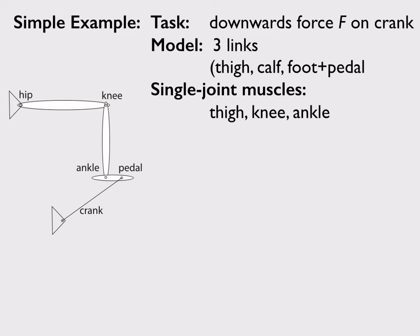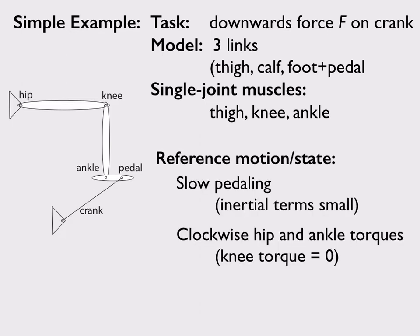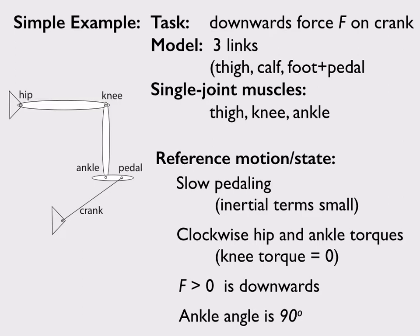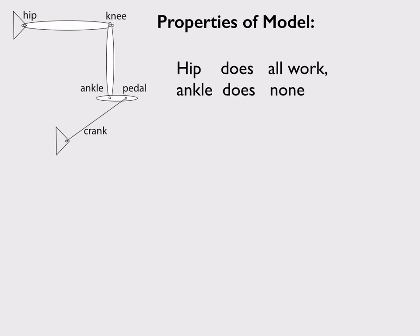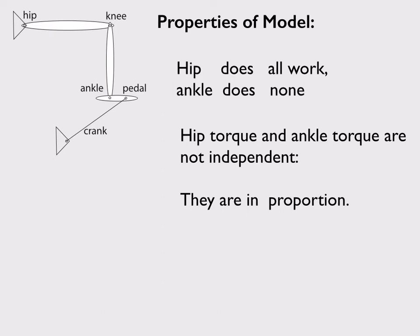Here's the bicycle model. We have a hip, a hip muscle, a thigh, a knee, a knee muscle, an ankle, an ankle muscle, and a pedal. The pedal and foot are one thing. We're talking about the ankle joint location on the foot, and we're trying to push down on the crank. We imagine this is occurring relatively slowly so that inertial terms are small — slow pedaling. The knee torque is zero, the force is downward in this configuration, and we hold the ankle angle constant in this reference motion. The hip does all the work, the ankle does none, the knee does none, and the hip torque and ankle torque are not independent — the ankle torque is proportional to the hip torque.